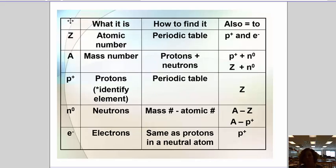Another way to put all this is in a chart. You can pause the video and copy this chart down. This tells you what Z is—atomic number—how to find it on the periodic table. It's also equal to the number of protons and electrons. So Z, p⁺, and e⁻ are all going to be equal to each other.